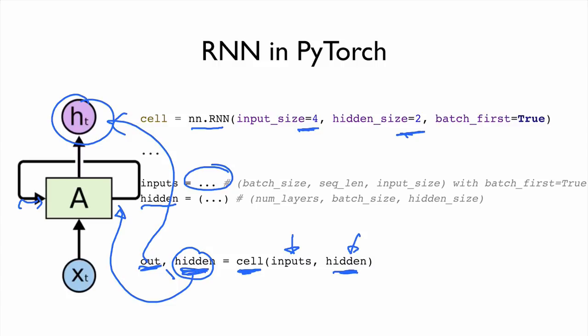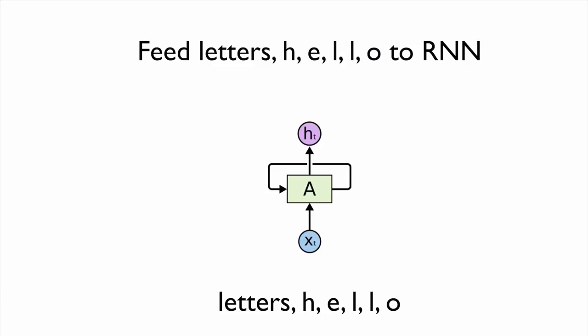This hidden will be used for the next cell. So if we call the cell again with another input, the hidden from the previous call is used as input. This is the typical idea of using RNN — the hidden is passed along to the next cells.